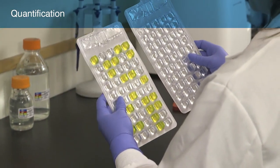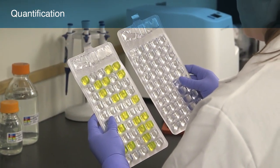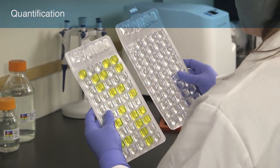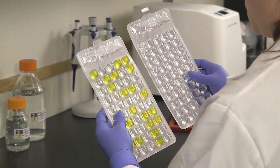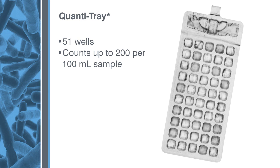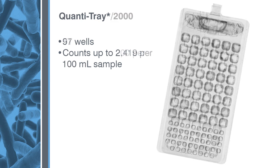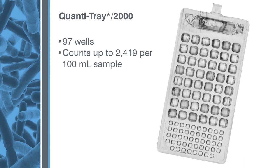Next, you'll learn how to use the ColAlert test with the QuantiTray system to determine the number of coliforms and E. coli in a water sample. IDEX offers two sizes of QuantiTray. Both work with the QuantiTray sealer. The standard QuantiTray is a disposable 51-well tray that provides counts up to 200 per 100 ml sample without dilutions. The QuantiTray 2000 is a disposable 97-well tray that provides counts up to 2,419 per 100 ml sample without dilutions.